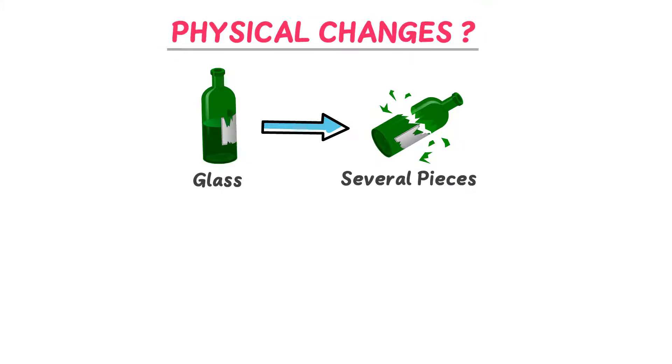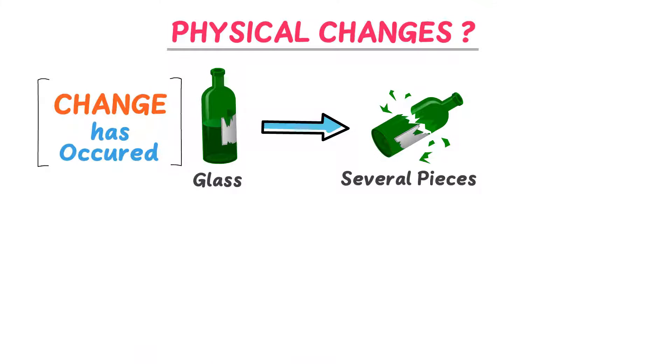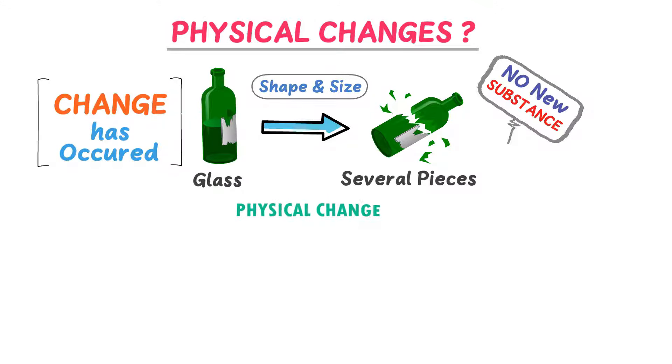Well, consider a bottle made up of glass. Let this bottle fall and break up into several small pieces. We say that change has occurred in the system because the bottle changed its shape and size. We know that each and every piece of the bottle is still glass or made up of glass. Even though the glass changes shape and size when it breaks, it doesn't form a new substance. So this is an example of physical change.